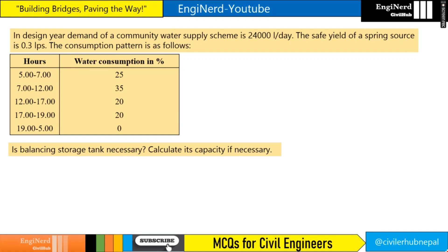Hello everyone, welcome to Engineered. In this video, we will be discussing this particular numerical from the capacity of balancing reservoir. The demand of a community water supply scheme is 24,000 liters per day. The safe yield of a spring source is 0.3 LPS. The consumption pattern is as given. The question asks: is a balancing storage tank necessary? Calculate its capacity if necessary.